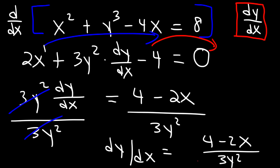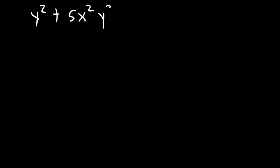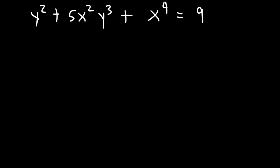dy over dx is equal to 4 minus 2x divided by 3y squared. And so that's how you use implicit differentiation to find dy over dx. Now let's try another problem. Let's say if we have y squared plus 5x squared y cubed plus x to the fourth equal to 9. How can we find dy dx in this case? Notice that we have multiple y variables — feel free to pause the video and try it.